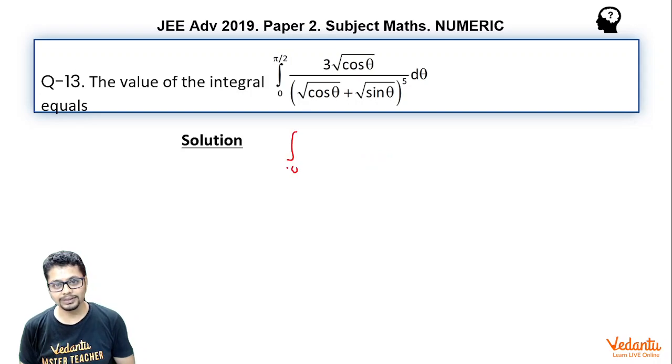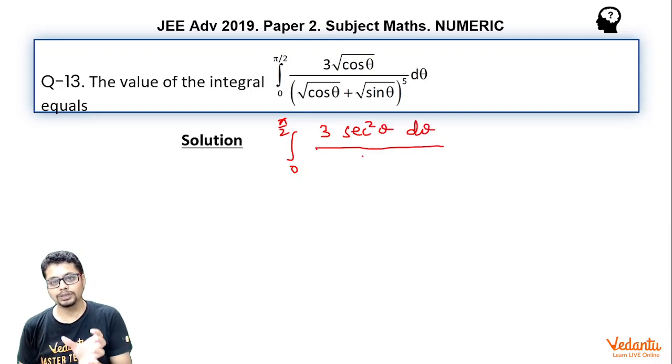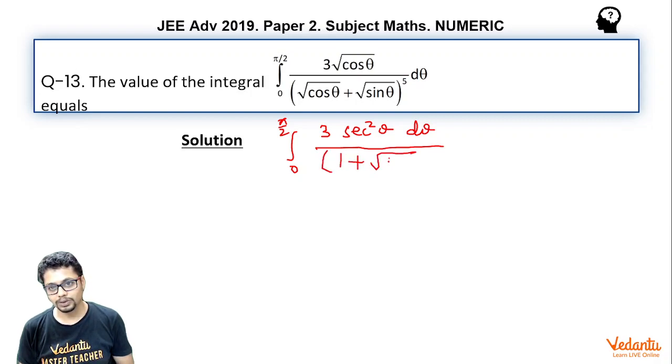So, this will give us integral 0 to pi by 2, 3, root cos theta divided by cos to the power 5 by 2 theta in numerator would give you sec square theta. And in denominator, as you divide denominator by cos to the power 5 by 2 theta and you take inside this expression, which is having power 5, you'd essentially get 1 plus root tan theta whole to the power 5.